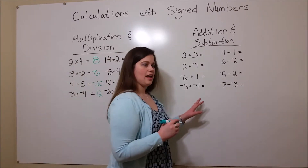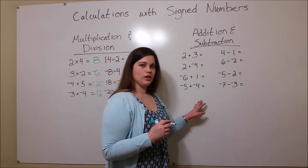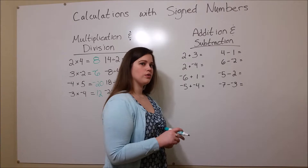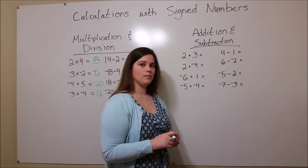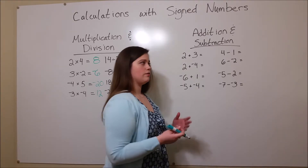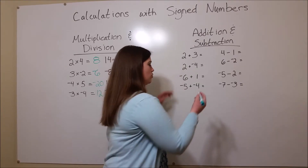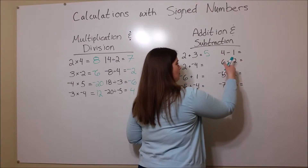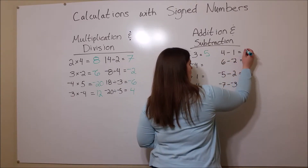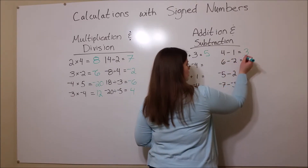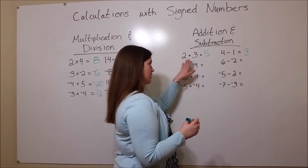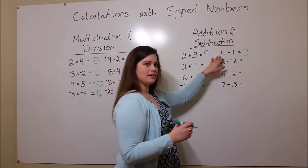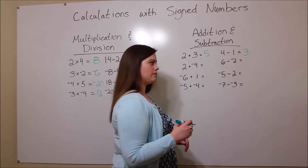Now let's look at the rules for addition and subtraction. Again, when both numbers are positive, it's fairly straightforward. 2 plus 3 equals 5, and 4 minus 1 equals 3. We have positive numbers being added or subtracted, and the answer is positive.